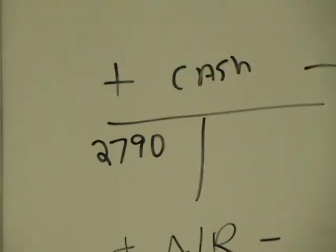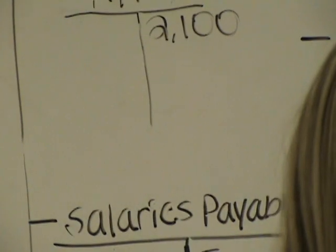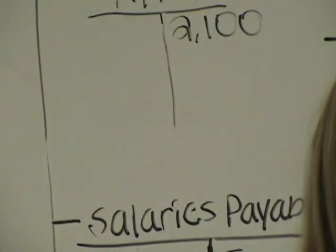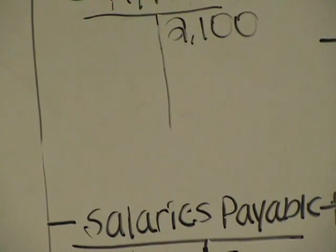What we're going to do is a problem in the Queso Wagon, 8th edition, problem 3-5A. So in this problem, she puts all the numbers. Let's read the first journal entry. Matt will read it to us. Paid $1,100 for salaries due employees, of which $600 is for November.